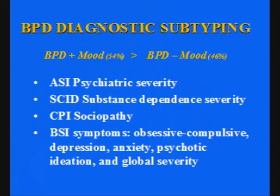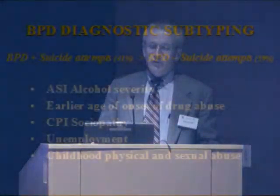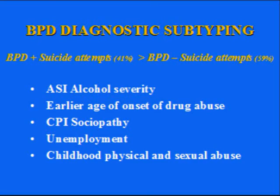When we look at subtyping based on mood disorder, we see a bit more coming out. BPD substance abuse patients who also have a mood disorder have higher rates of psychiatric severity, whether assessed with the ASI (Addiction Severity Index), the Brief Symptom Inventory and all of its subscales, a measure of sociopathy from the California Psychological Inventory, or addiction severity. The half of BPD patients who meet criteria for mood disorders are more severe in other ways. Similarly, looking at those with a history of suicide attempts — about 40% of the sample — we see a nice prediction of other kinds of historical and symptom problems. Suicide ideation is higher than that in the sample, but the focus was specifically on suicide intent.